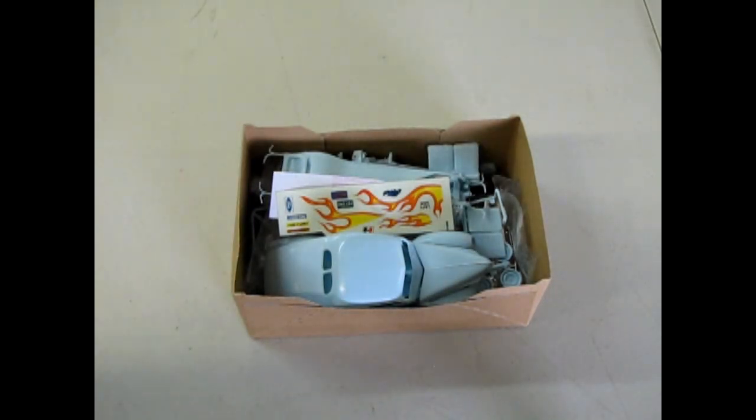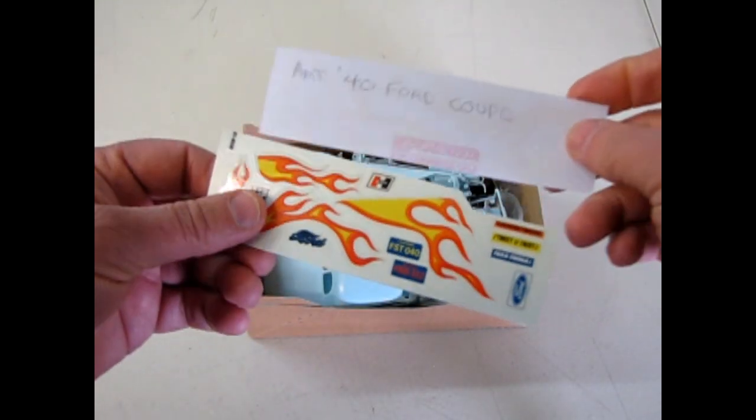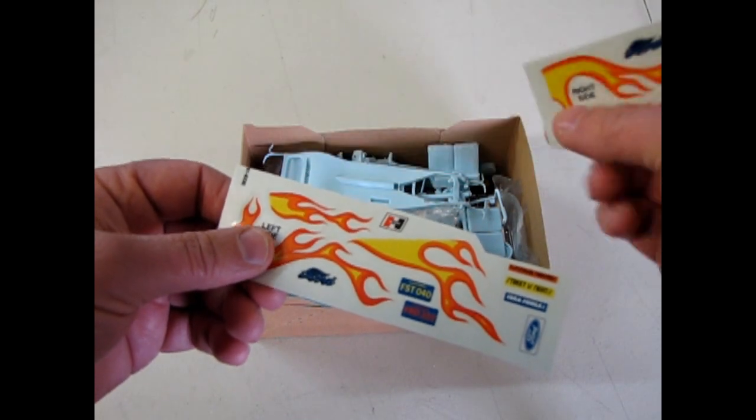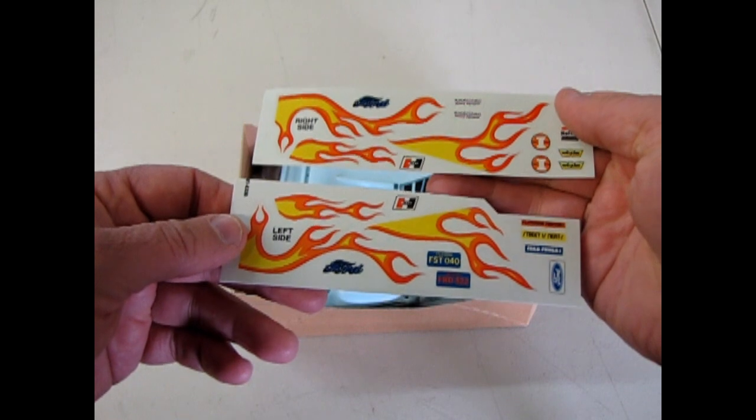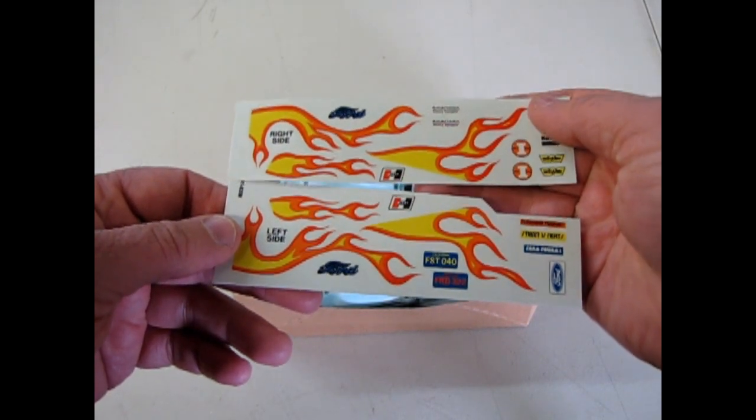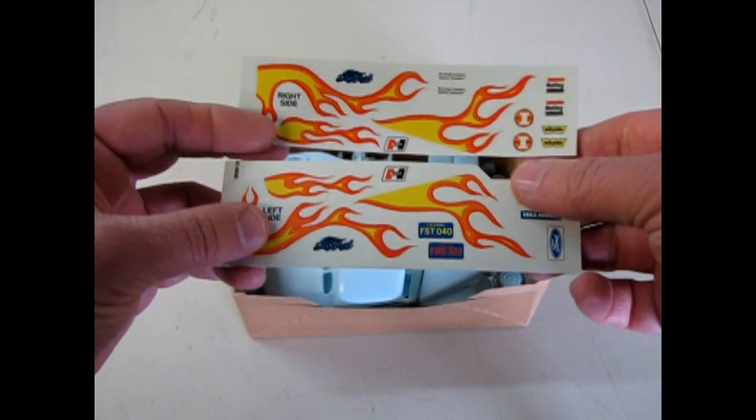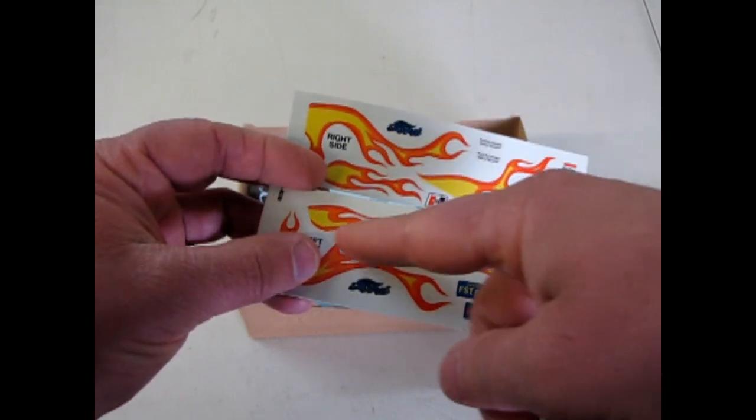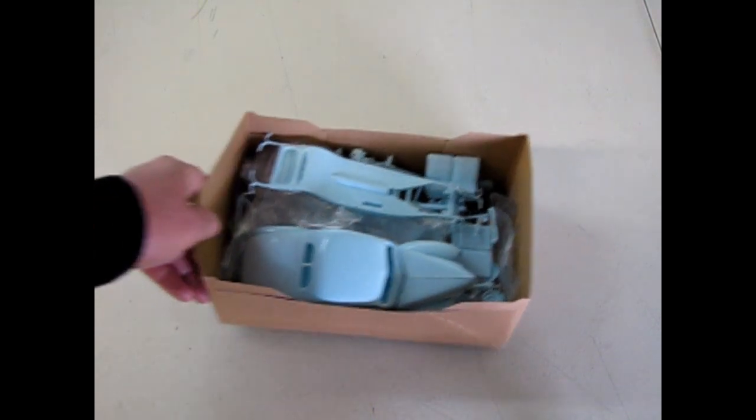And then this is where these decals go. Unfortunately, in our kit, the original owner cut out the Avenger decal that goes on the side of the door. But there's still the nice flames that go on the front fenders, and on the hoods, and even on the top of the fenders.